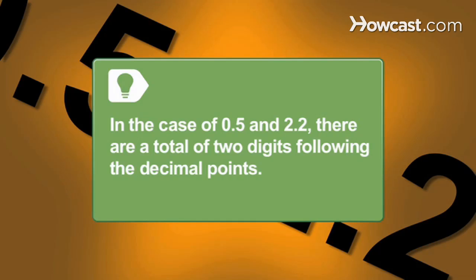Step 2. Count how many digits follow the decimal points in the two decimal numbers you are multiplying. In the case of 0.5 and 2.2, there are a total of two digits following the decimal points.